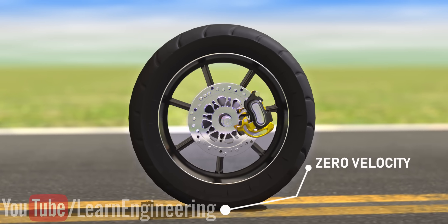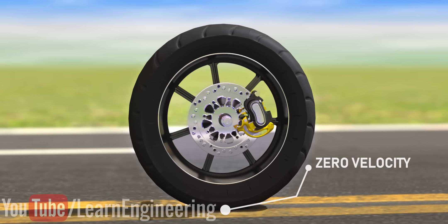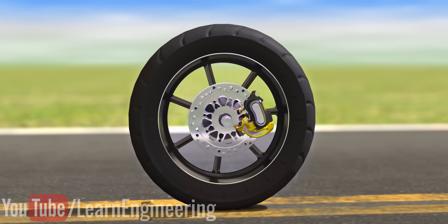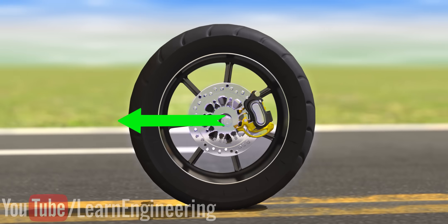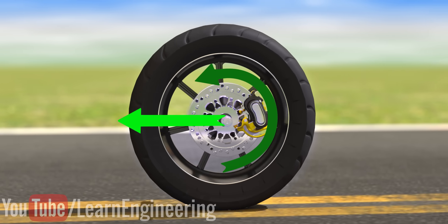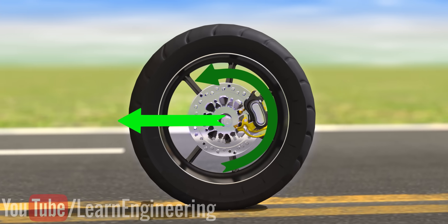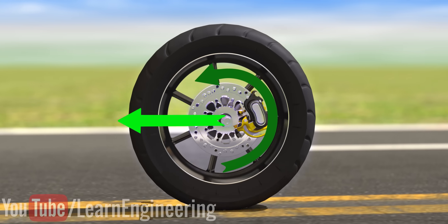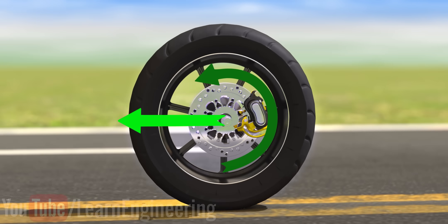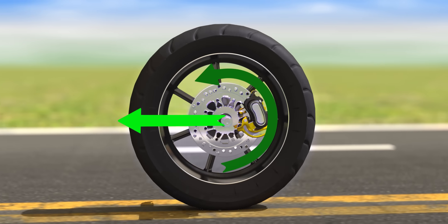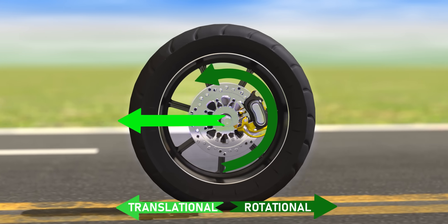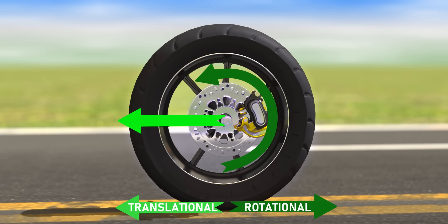But how is zero velocity possible for a moving wheel? It is possible because the wheel has two kinds of motion: a translational motion along with the vehicle, and a rotational motion on its own axis. You can see that it is possible to make the resulting velocity zero at the contact point, since the translational and rotational velocities are in opposite directions.